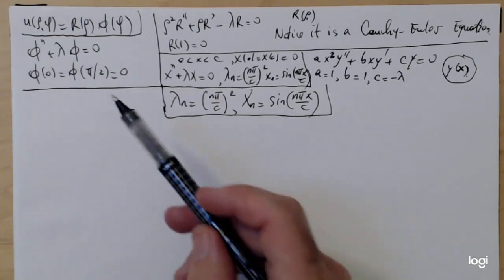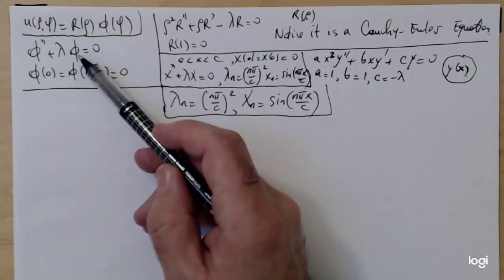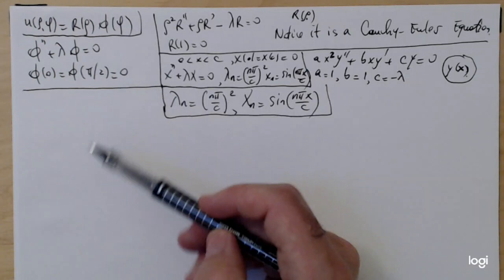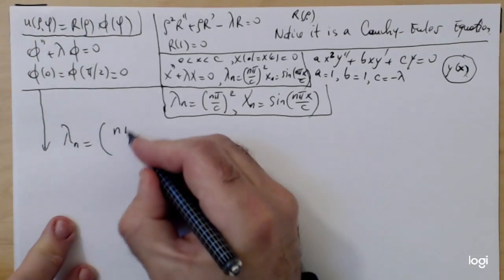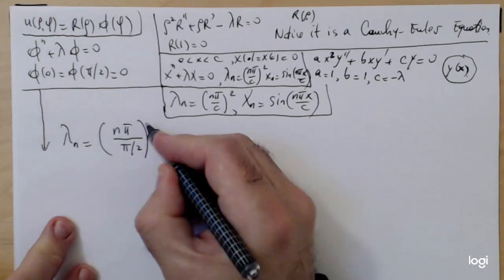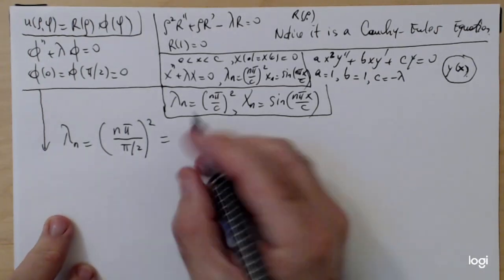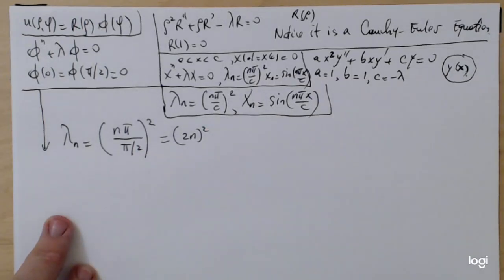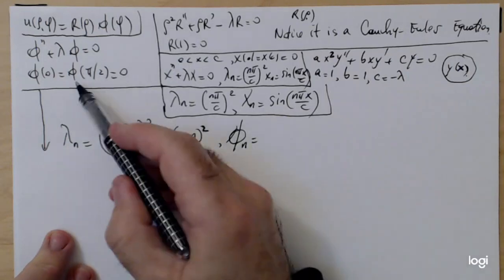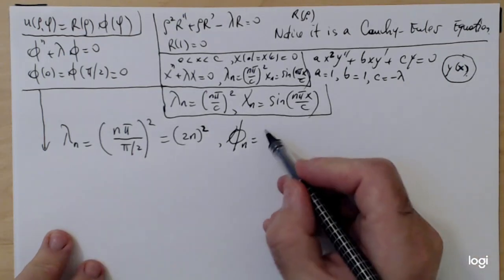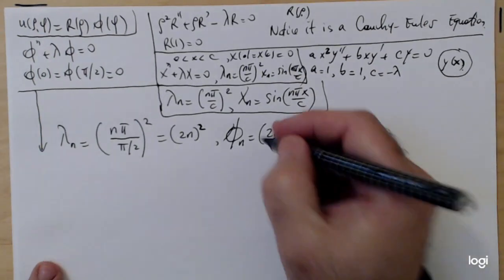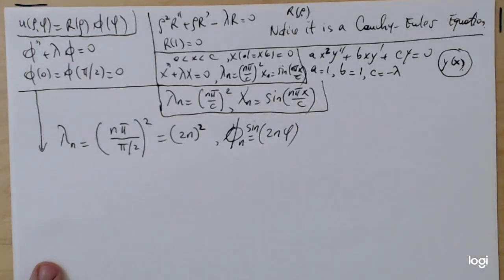We simply have to adapt this to our eigenvalue problem. Instead of big X we're going to have phi, and instead of c we're going to have pi over 2. In our case, the eigenvalues lambda_n are (nπ divided by c)², which is (nπ/(π/2))², so simplifying, the eigenvalues are (2n)². The eigenfunctions, which we call phi_n in accordance with the problem notation, come out as sin(2n·phi).